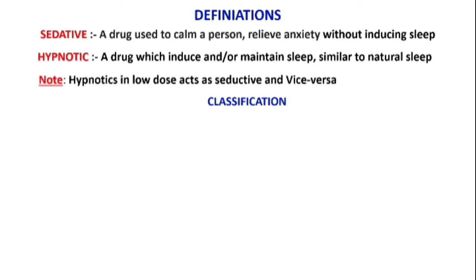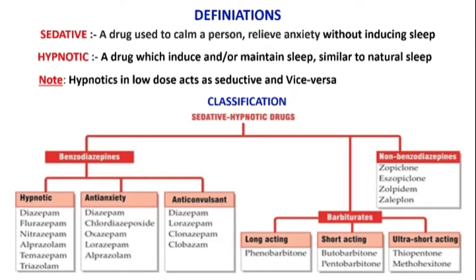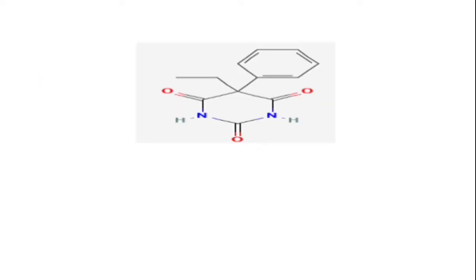Here is the classification of hypnotics and sedative drugs. They are basically classified into three types: benzodiazepines, barbiturates, and non-benzodiazepines. Benzodiazepines are further classified into three types: hypnotics, anti-anxiety, and anti-convulsants. Barbiturates are further classified into three types: long acting, short acting, and ultra short acting. Here is the structure of phenobarbital.